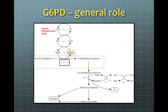NADPH enables cells to counterbalance oxidative stress that can be triggered by several oxidant agents. Red blood cells are the cell types in our bodies that don't have mitochondria, and so this pentose phosphate pathway is really crucial to them because it's their only source of NADPH, and so their defense against oxidative damage is really dependent on the enzyme G6PD.